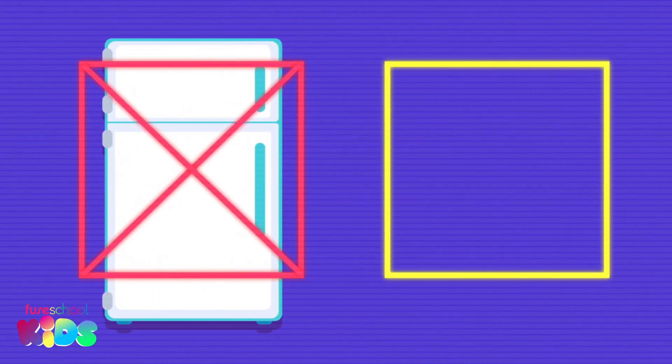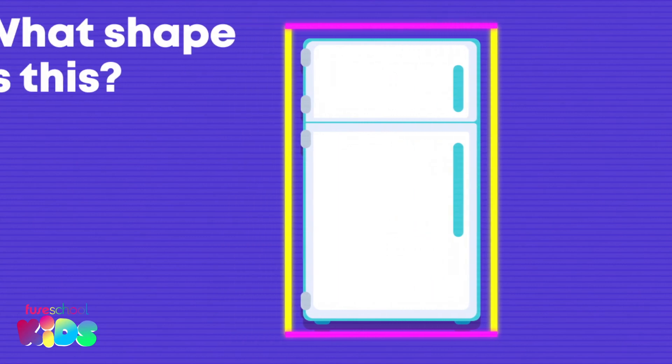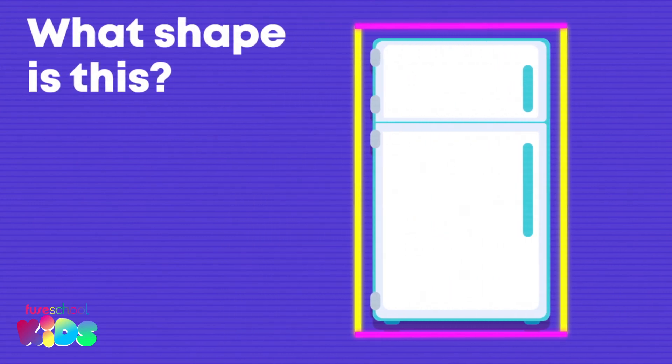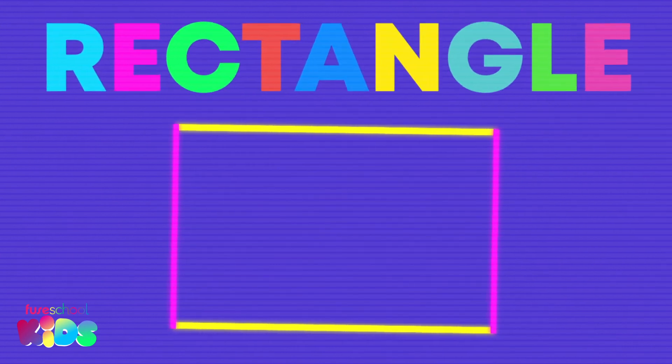Should we give this to the square alien? No, we shouldn't — because it is not a square. The 4 sides are not the same length. Can you tell me what shape it is? Well done to everyone who said rectangle. It is a rectangle because it has 2 equal longer sides and 2 equal shorter sides.